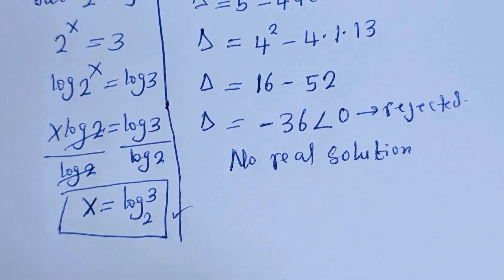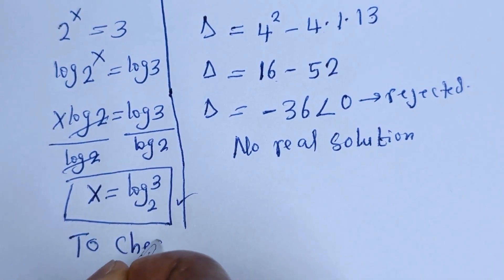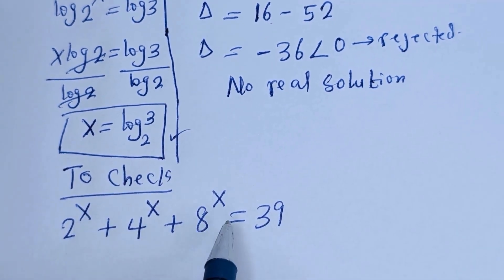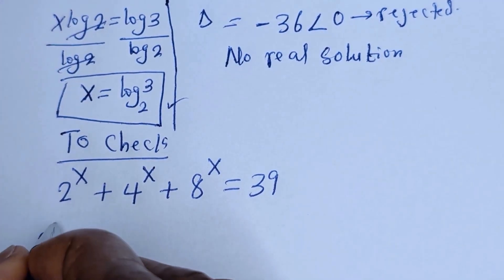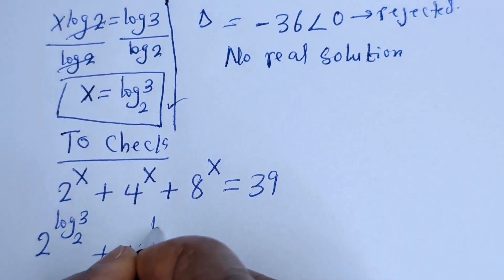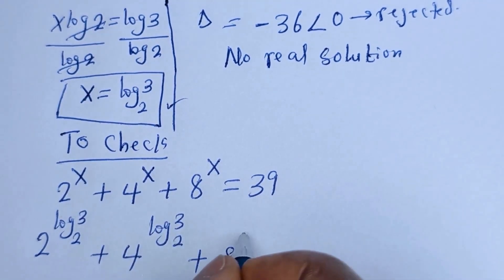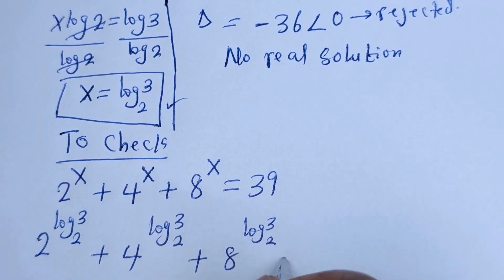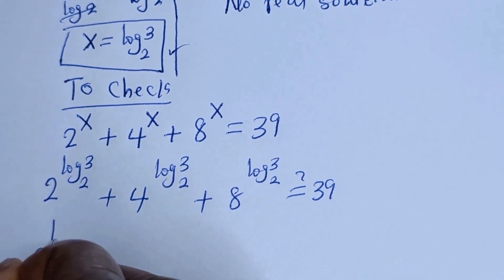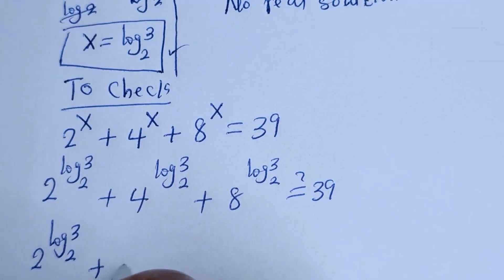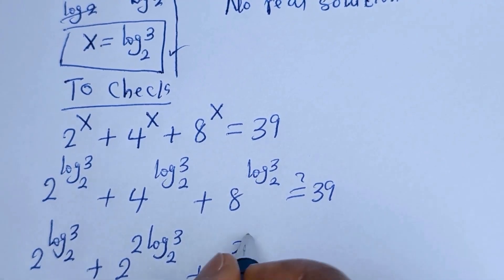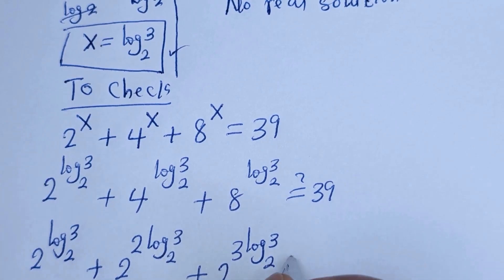We may check to confirm if this answer is right. We have the given equation: 2 raised to power x plus 4 raised to power x plus 8 raised to power x equals 39. Substituting x equals log 3 base 2: 2 raised to power log 3 base 2, plus 4 raised to power log 3 base 2, plus 8 raised to power log 3 base 2.